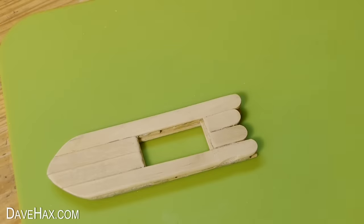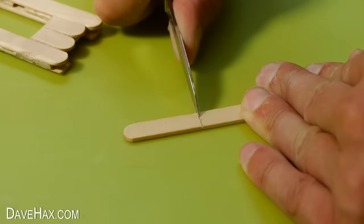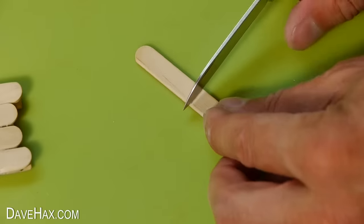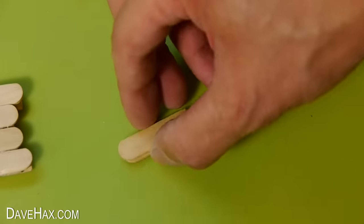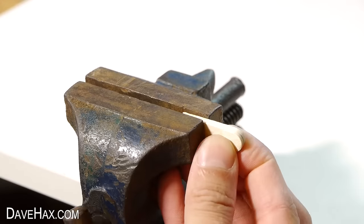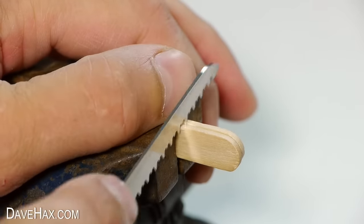To make the paddle, you need to cut another stick slightly shorter than the gap in the boat, and cut another one exactly the same length. Then line them up. I'm pinching mine together in a vise because we need to cut a groove straight down the center, just over halfway down the sticks.